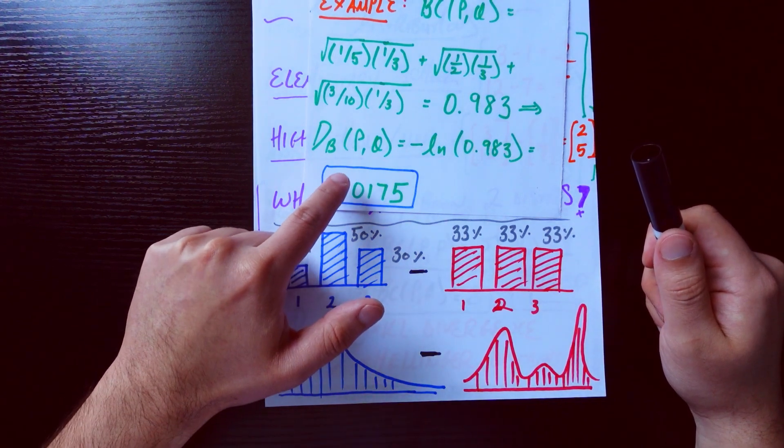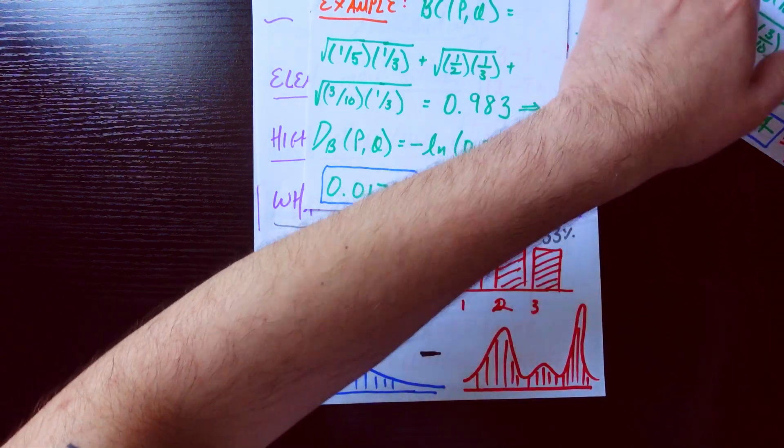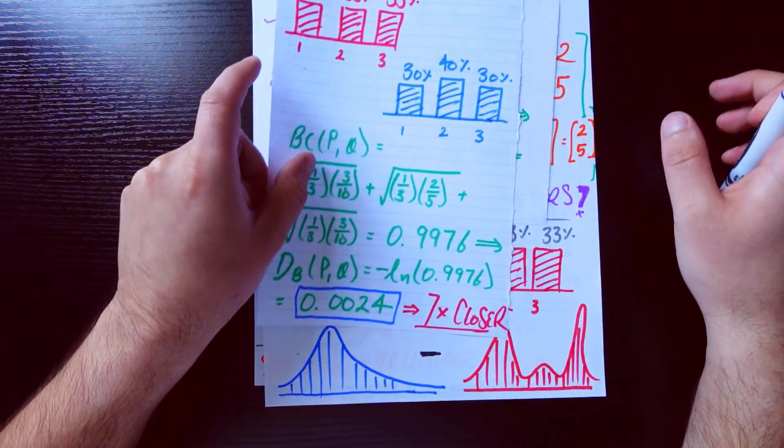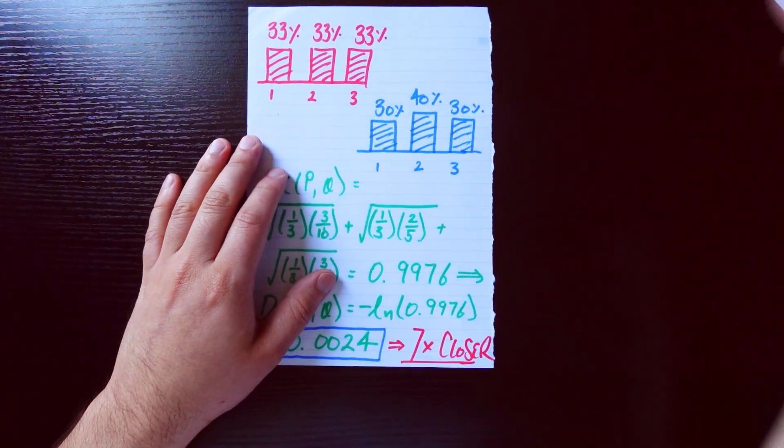We go and take the negative natural log of that, and we find the distance or difference between these two distributions using this distance metric we just talked about is 0.0175. That doesn't mean much unless we're comparing it to something.